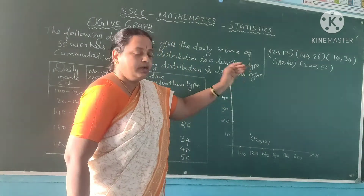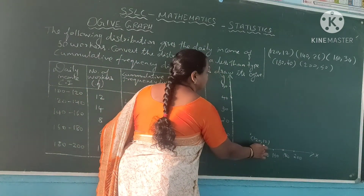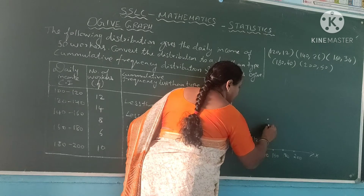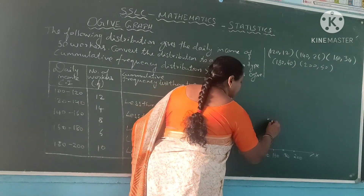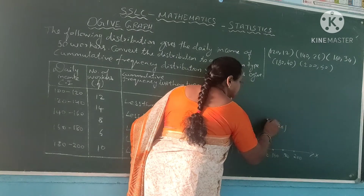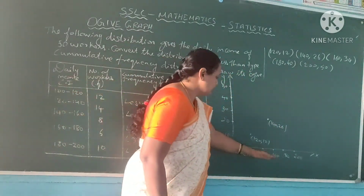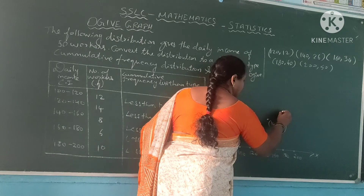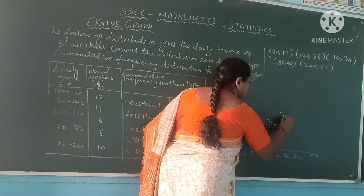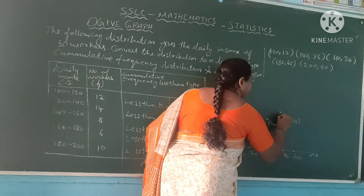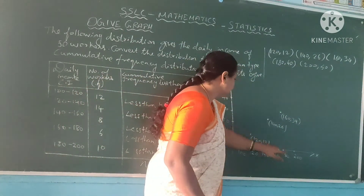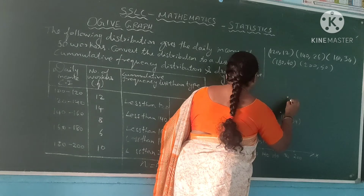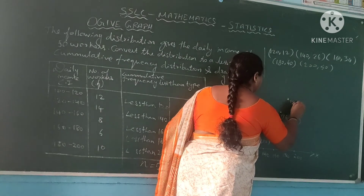Next, 140 comma 26. 140 is on the x-axis and 26 is on the y-axis. These two lines come and join here at 140 comma 26. Next, 160 comma 34 — 160 is on the x-axis and 34 is on the y-axis, so the point lies here. Next, 180 comma 40 — 180 is on the x-axis and 40 is on the y-axis, so 180 comma 40 lies here.